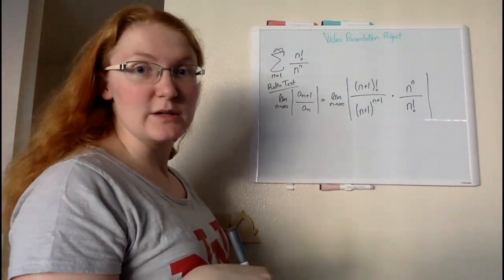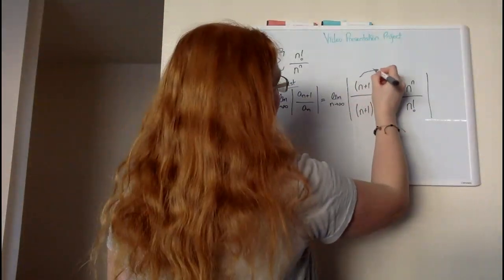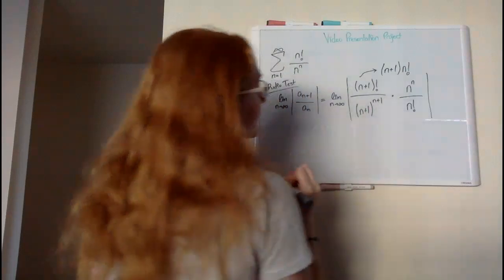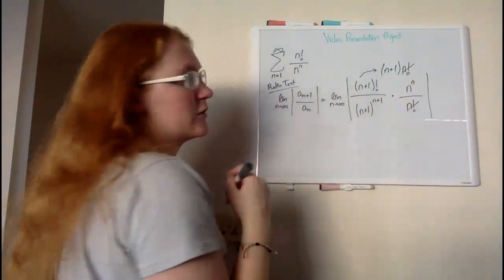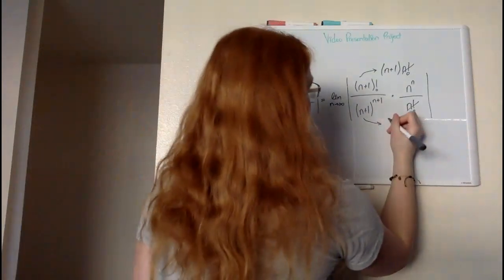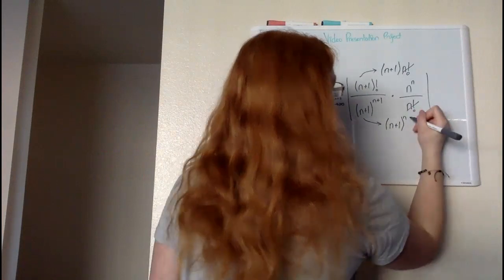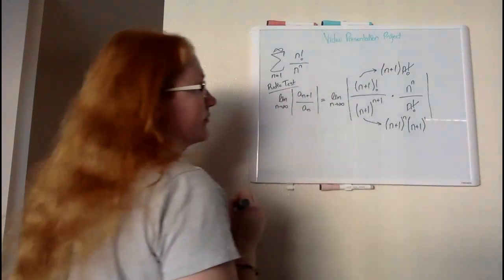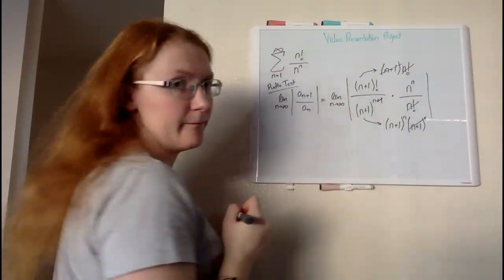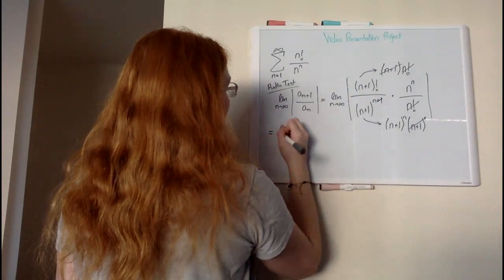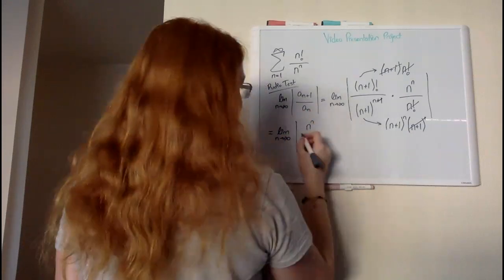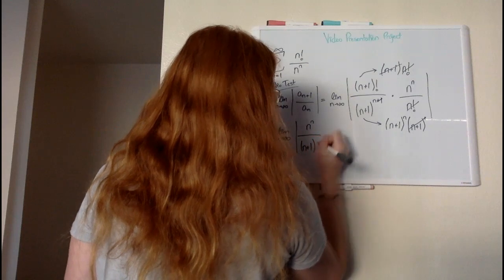As I mentioned in the previous example, n plus one factorial can be expanded to n plus one times n factorial. So immediately we're going to identify the n factorials and those two are going to disappear. Now the denominator is a little different — we see that it's going to be n plus one to the nth power and n plus one to the one power. From here we can identify that we can get rid of the n plus one in the numerator because we have it there, which leaves us with our limit of n as it goes to infinity, the absolute value of n to the nth power all over n plus one to the nth power.